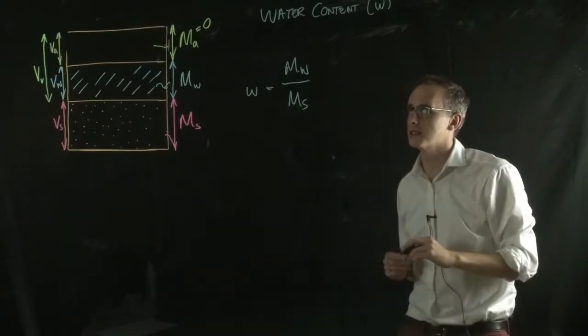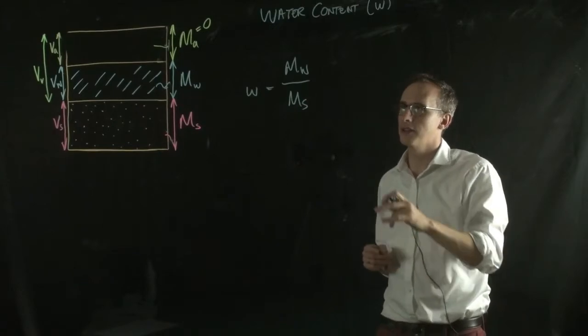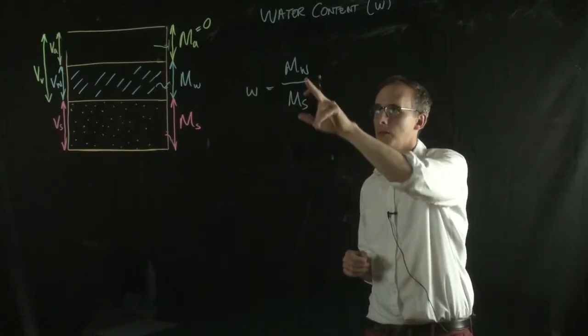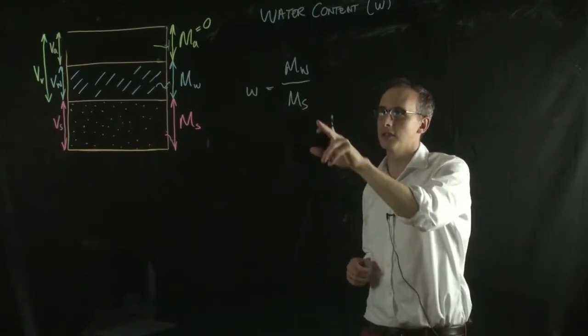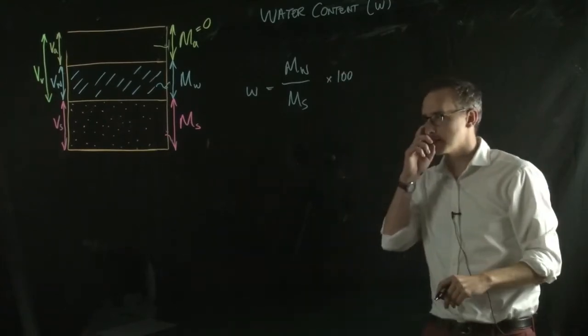This is the water content of the soil and it's usually expressed either as a ratio, so mass of water over mass of solid, or sometimes as a percentage, so you can just multiply that by 100 to give it as a percentage.